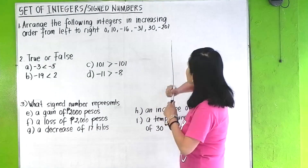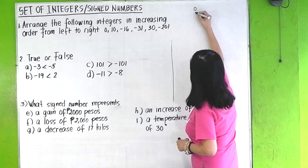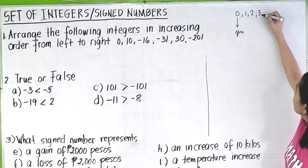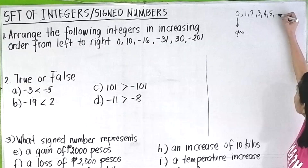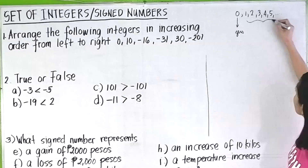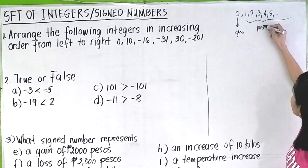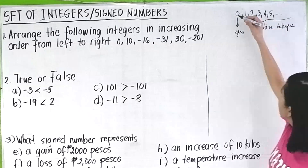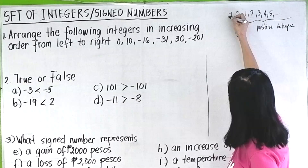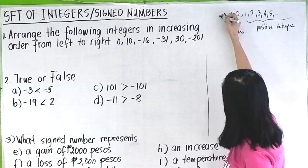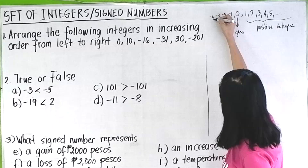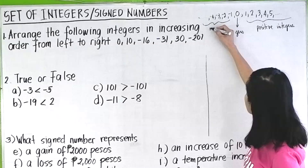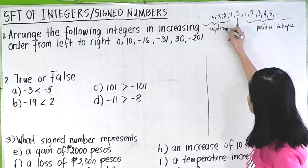The set of integers is the set of zero, the positive integers — one, two, three, four, five, and so on — and the negative integers: negative one, negative two, negative three, negative four, negative five, and so on and so forth. So these are the negative integers.